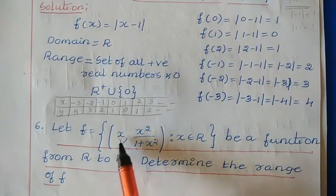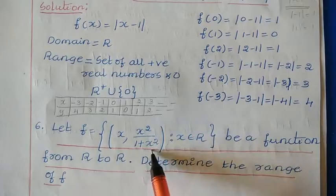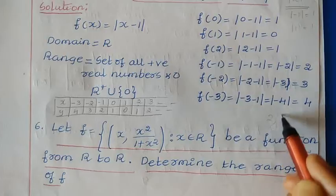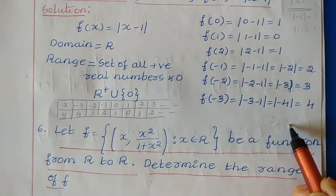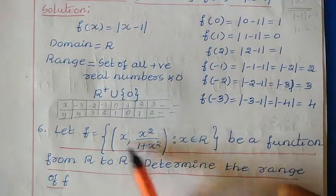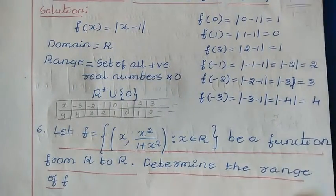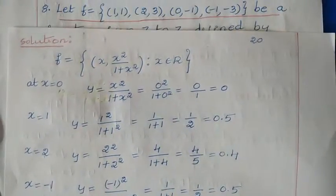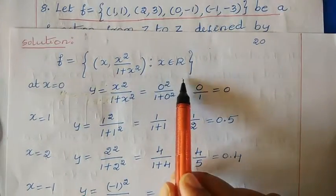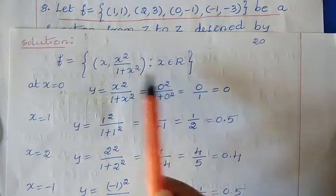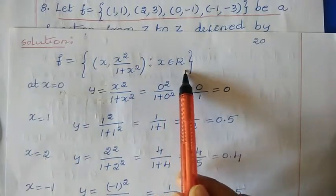If it is an ordered pair, then the first value is x and the second value is the y value. So if you have (2, 4), then 2 is mapping to 4 — the first element belongs to the first set and the second element belongs to the second set. So here, this is the x value and this is the y value. We need to find out the range. The function is f(x) = x²/(1 + x²), where x ∈ ℝ.